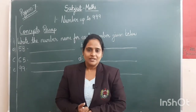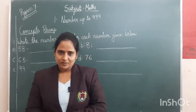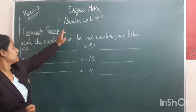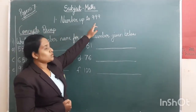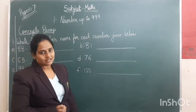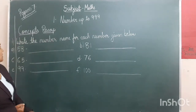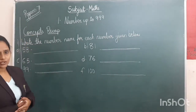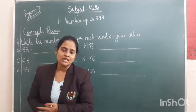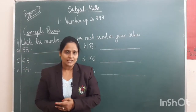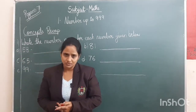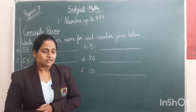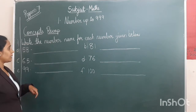Hello everyone, today I will teach you maths. Page number 7. Our topic is the numbers up to 999. In this we will just revise everything whatever I taught you. In the last video we learned what is expanded form and what are the place values. In this lesson it will be a recap of all those concepts.